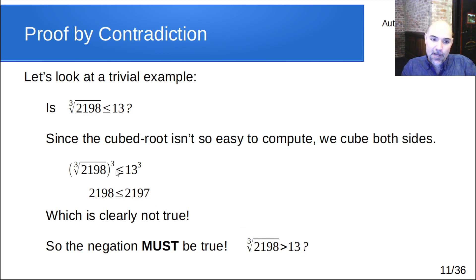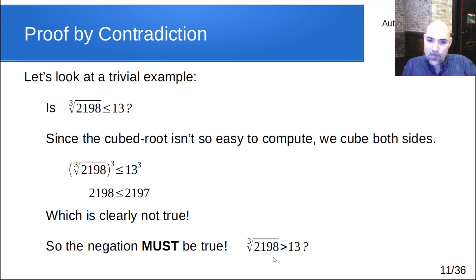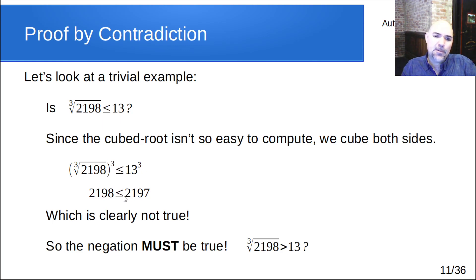Since that's not true, we've proven the negation must be true: the cube root of the original number has to be greater than 13 — which is the negation of it being less than or equal to 13. We did all our calculations assuming less than or equal, and since that came out false, the opposite must be true. That's the concept behind proof by contradiction: we take what we want to show, assume the opposite — the negation — and then show that's not the case, which means the first thing has to be true.